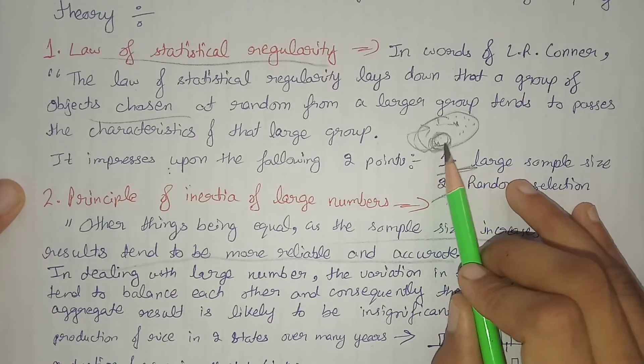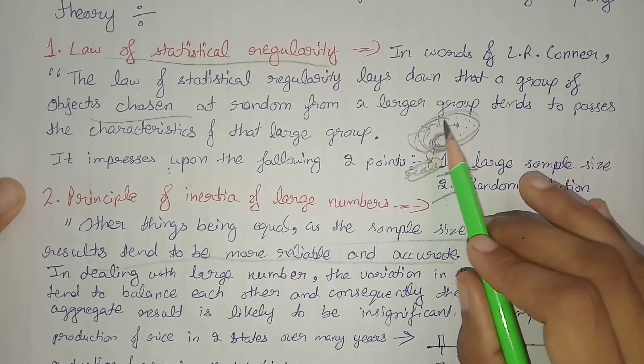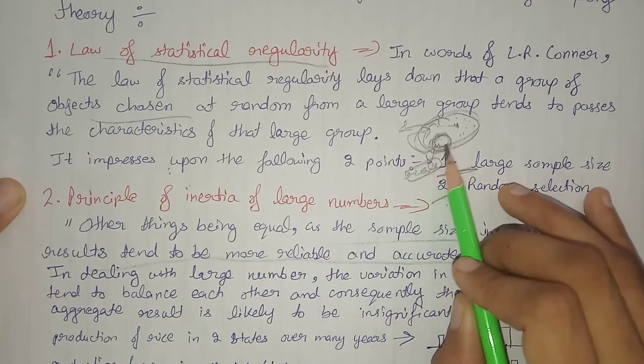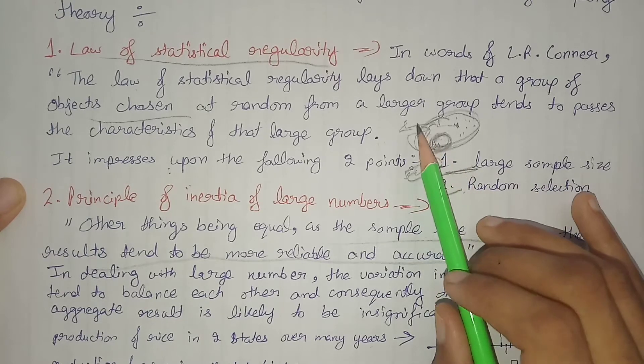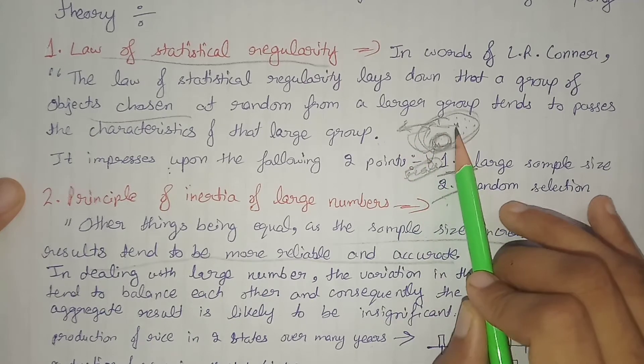According to this law, the larger the sample we choose, the more reliable the results will be. We will be able to find out reliable characteristics of the population from this sample.